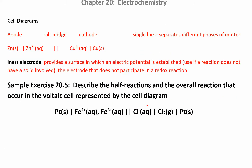Instead of drawing the full diagram every time, you can use a shorthand called the cell diagram. Everything to the left of the double line is in the anode; everything to the right is in the cathode. Again, keep them in alphabetical order — anode, cathode — and you can figure out what the half reactions look like from there.